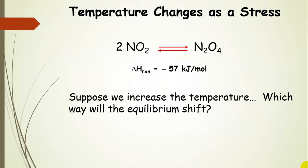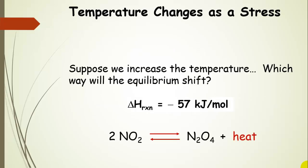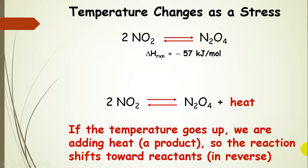Here's an example: nitrogen dioxide is in equilibrium with dinitrogen tetroxide. The delta H for this reaction is negative 57 kilojoules per mole, so it is exothermic. Now if we increase the temperature, which way will the equilibrium shift? Since delta H is negative, heat is a product. When we increase the temperature, we're adding heat — which means we're adding product. If we add product, the reaction shifts toward reactants. So for this exothermic reaction, increasing the temperature causes the reaction to shift in the reverse direction.